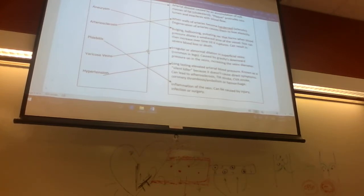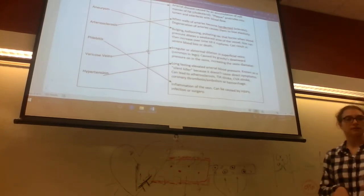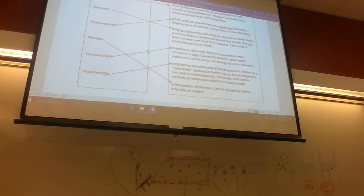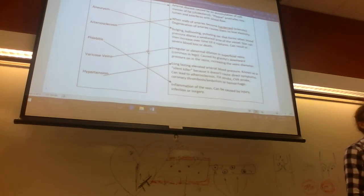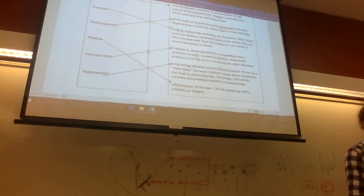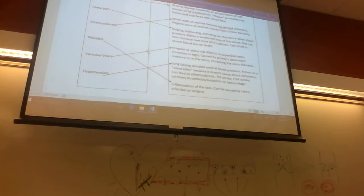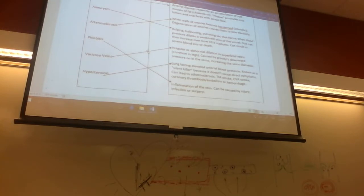Phlebitis — 'phleb' means vein, 'itis' means inflammation — so phlebitis is inflammation of a vein. It can be caused by injury, infection, or surgery. Some people develop spider veins or varicose veins that are bad and painful, but phlebitis is when those veins look really bumpy because they're damaged, full of blood, and probably painful.